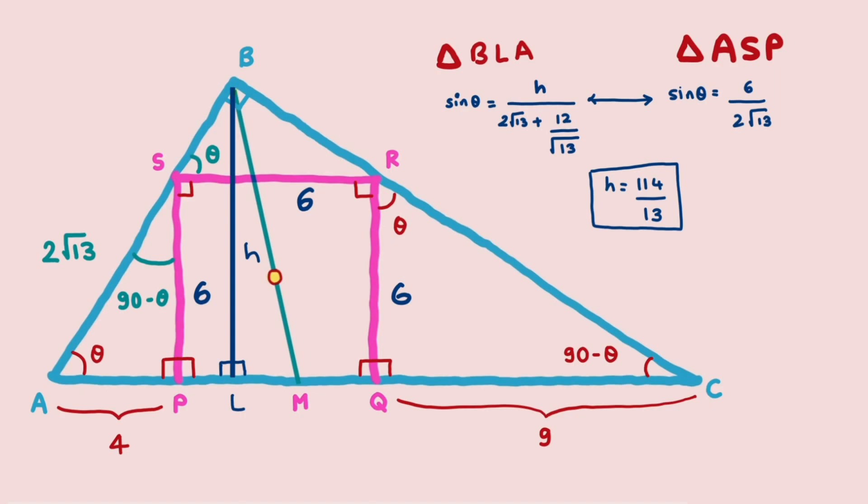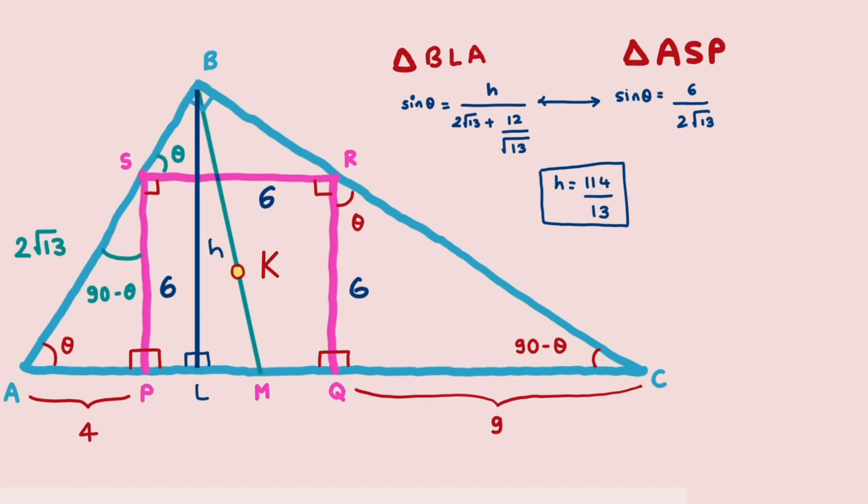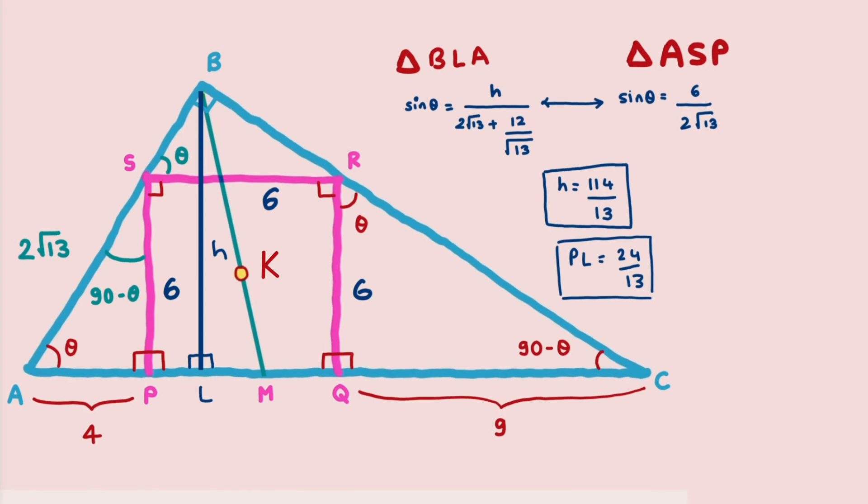We now have H = 114/13 from comparing sin theta in the two triangles. Comparing the values of cos theta in these same two triangles gives PL = 24/13.